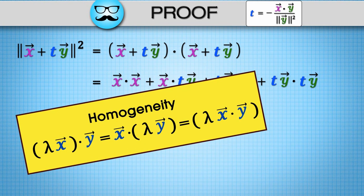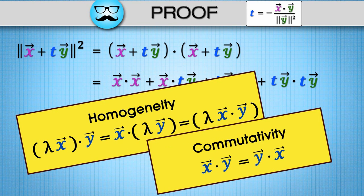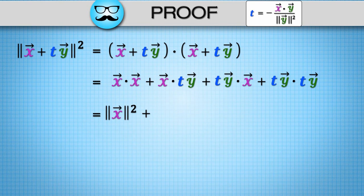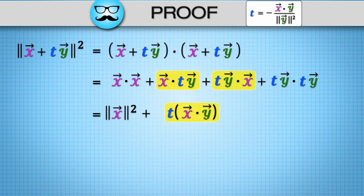But by homogeneity and commutativity of the dot product, we know x dot ty and ty dot x is the same as t times x dot y.